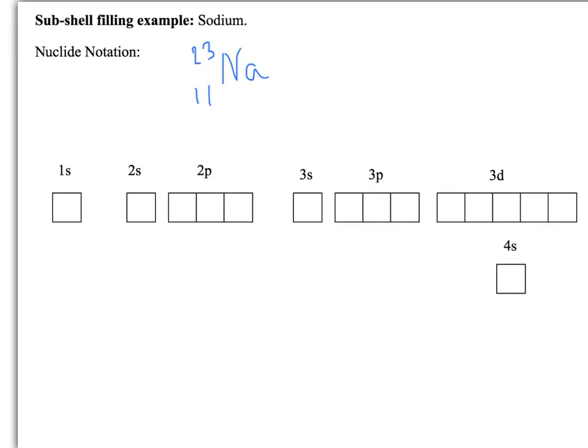We're going to have a look at a sodium atom. Looking at the nuclide notation, we've got 23 nucleons, 11 of which are protons. If this is an atom, therefore that means there are 11 electrons.